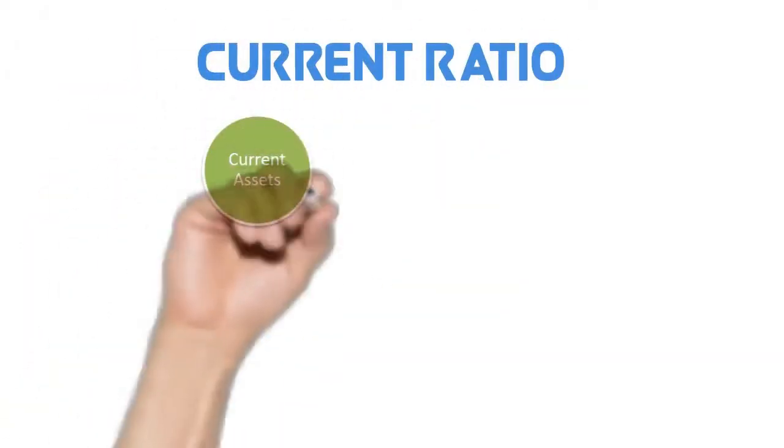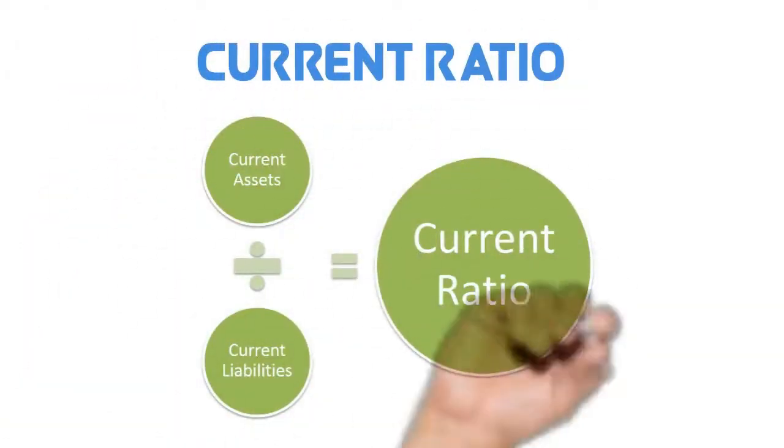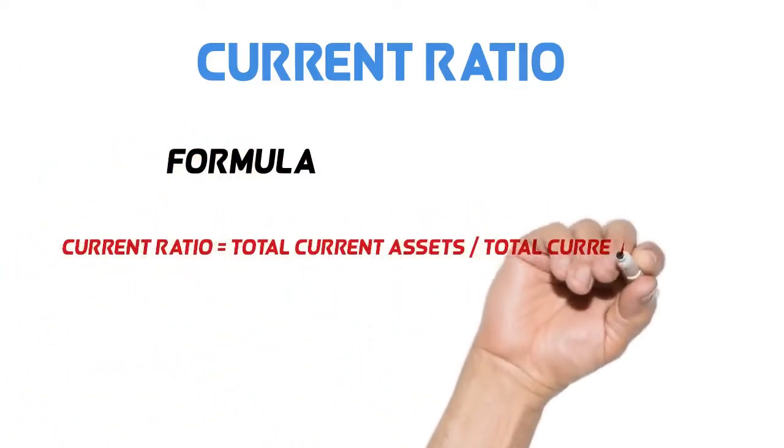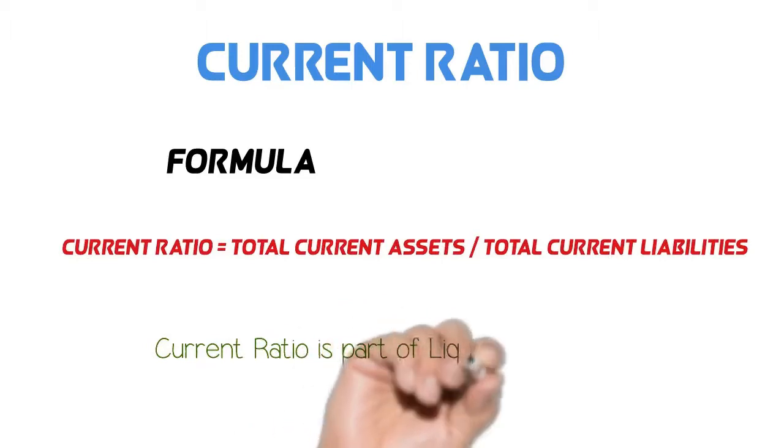The current ratio is a liquidity ratio that measures a company's ability to pay short-term and long-term obligations. Current ratio is one of the most important liquidity ratios of a company. We can calculate it as total current assets divided by total current liabilities.